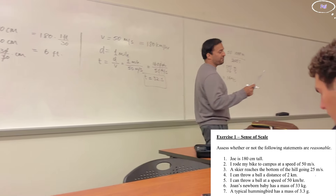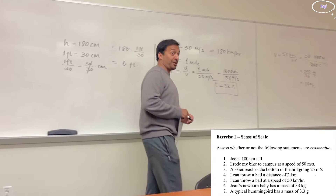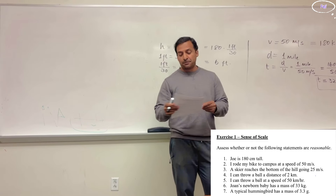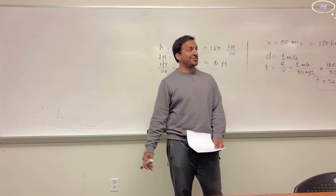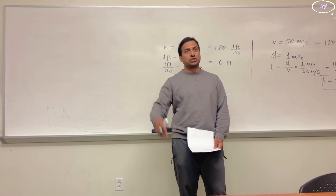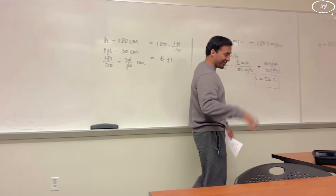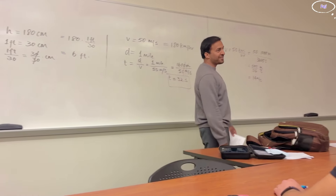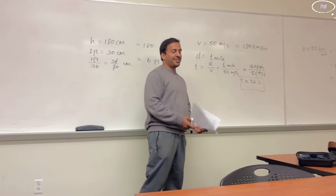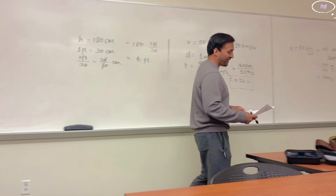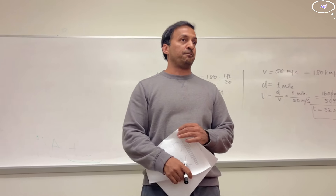The seventh one: 'A typical hummingbird has a mass of 3.3 grams.' Hummingbirds are very small. I thought 3.3 grams was still too low, but someone in my other class did a Google search and found the weight is between 2 to 22 grams. So in that case it's possible. This was a fun part — questions which teach you how to think and reason.